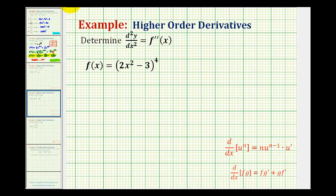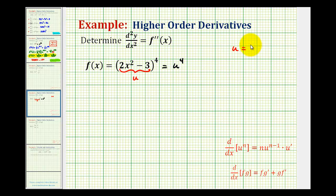We'll let the inner function of two x squared minus three equal u. So now we can rewrite the function in terms of u as u to the fourth. If we let u equal two x squared minus three, we know we're going to need u prime. u prime is going to be equal to four x.